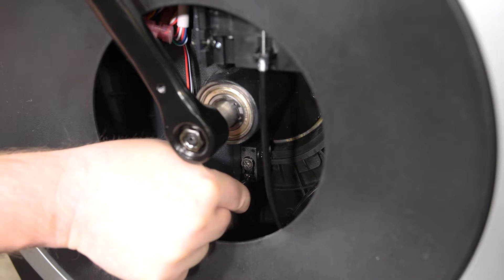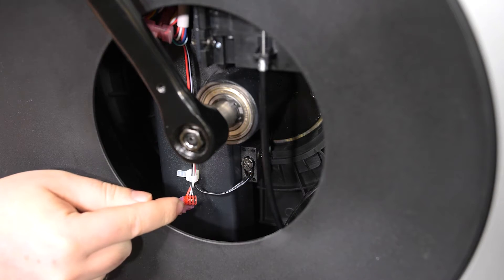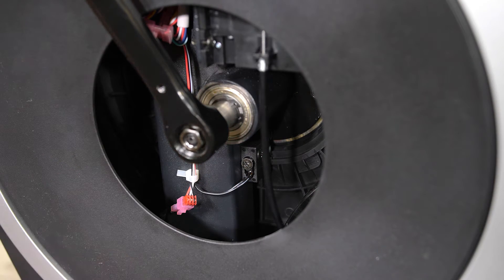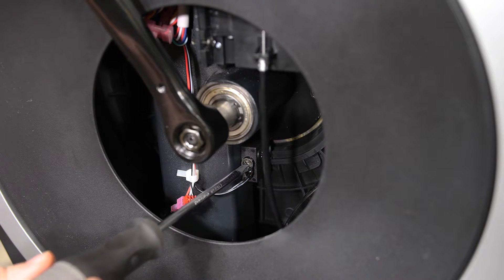Loosen the clamp screw and slide the read switch slightly towards or away from the magnet. Then retighten the clamp screw.